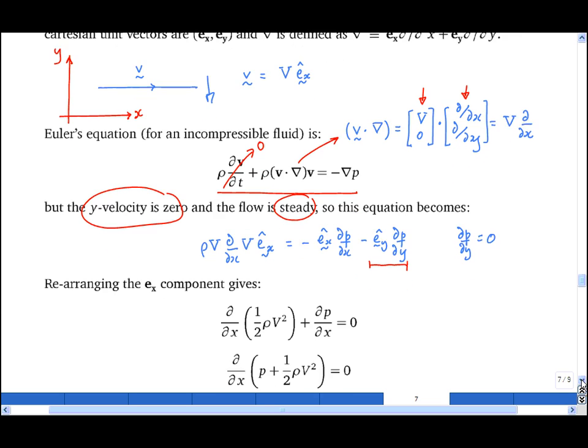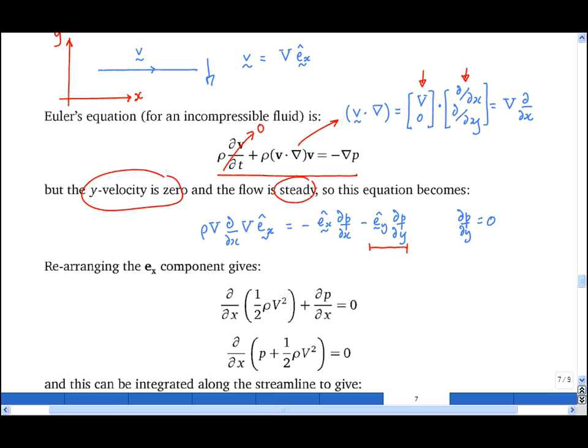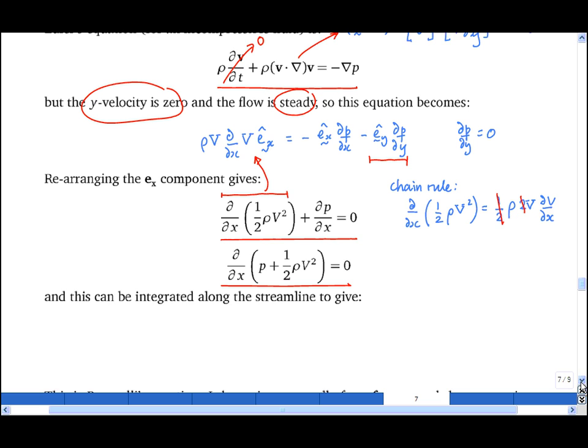And resolving in the x-direction gives this expression, in which I've used the chain rule, which here is that d by dx of a half rho v-squared is equal to a half rho d by dx of v-squared, which is 2v partial dv by dx. And now I have two terms, which are each d by dx of something, so I can put them together to give this expression, which is that d by dx of p plus a half rho v-squared is equal to zero.